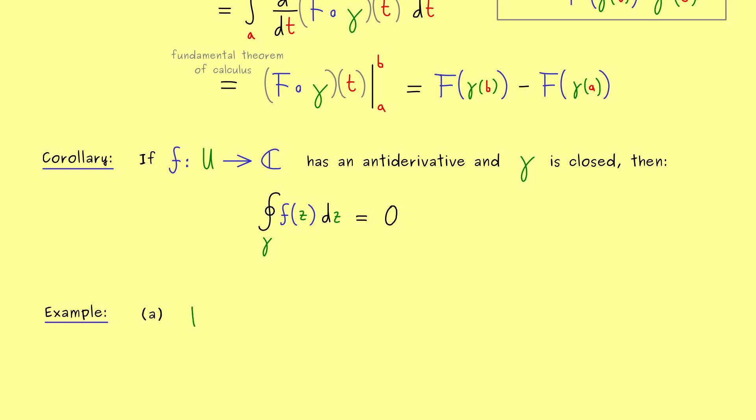So let's start with one where we have an antiderivative. So the domain U should be given as the complex plane without the origin. Because then we can look at the function f(z) given by 1 divided by z squared. And there of course we know we have an antiderivative capital F.